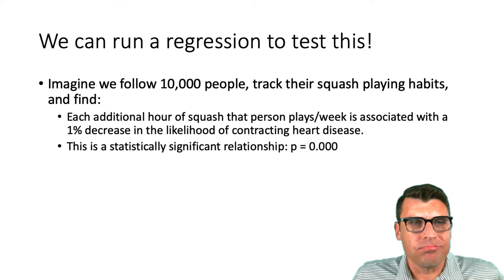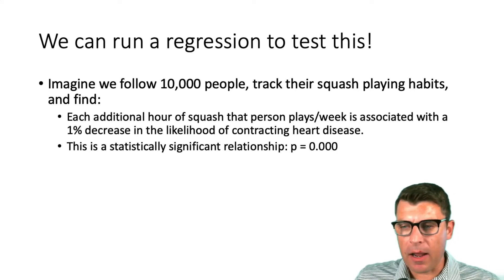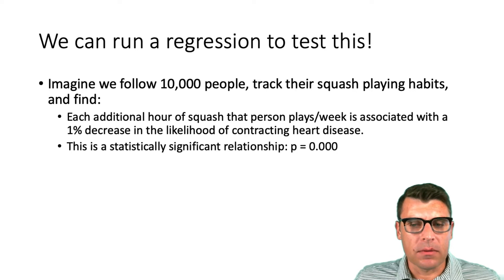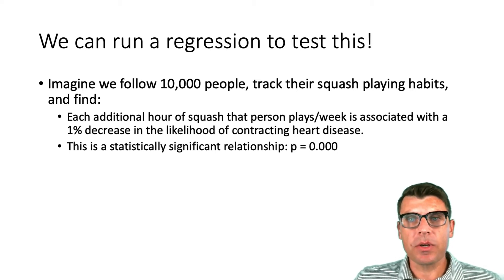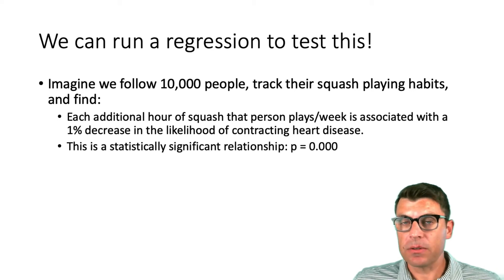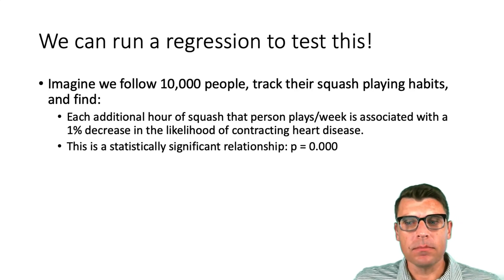Imagine we follow ten thousand people. We track their squash-playing habits — how many hours per week of squash they play, averaged over some period of time — and we gather data around whether or not they've got heart disease. Imagine we use a regression and find that each additional hour of squash a person plays per week is associated with a one percent decrease in the likelihood of contracting heart disease, and that it's a statistically significant relationship: p equals 0.000. That's pretty cool.